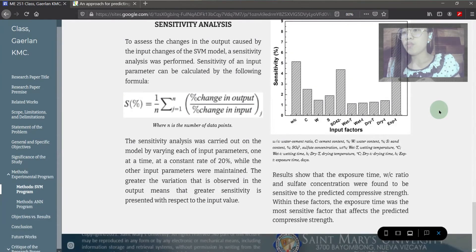For initial observation, as per data samples, the exposure time, water to cement ratio, and sulfate weight concentration were found to be sensitive to the predicted compressive strength. Within these factors, the exposure time was the most sensitive factor that affects the predicted compressive strength.